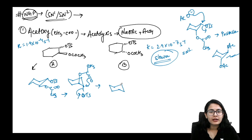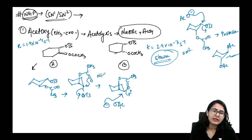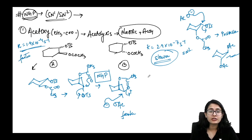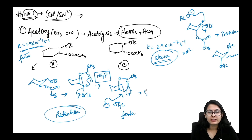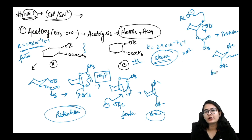In the diaxial conformation, the carbonyl of the acetoxy group pushes away the OTs, forming a cyclic intermediate with a positive charge on the oxygen. When the external nucleophile attacks and the bond opens, the reaction is faster due to NGP and gives a retention product — trans molecule from trans starting material.